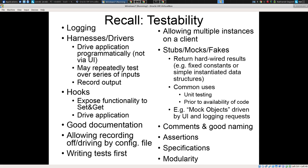Last time we talked about a bunch of different investments we can make in testability. Some of them are listed here — things like assertions, having a logging mechanism in place, test hooks. There are also process-related things like writing tests first, engaging in mocking and having a mocking framework in place. Another key component I mentioned last time was this notion of modularity — having the program not in big hairy batches of code, but rather dividing it up into small pieces. Traditionally we put those small pieces in functions or methods.